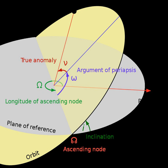For specific types of orbits, words such as perihelion for heliocentric orbits, perigee for geocentric orbits, periastron for orbits around stars, and so on may replace the word periapsis. See apsis for more information.